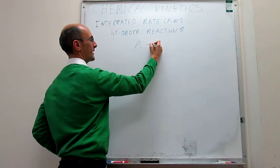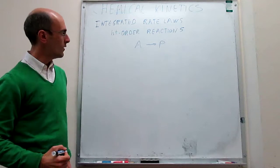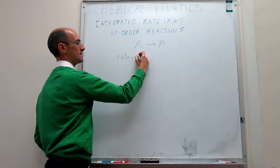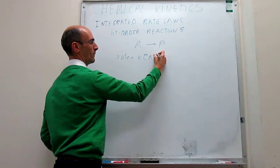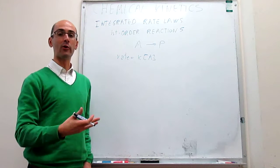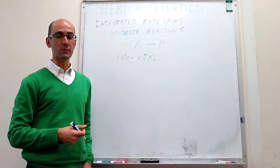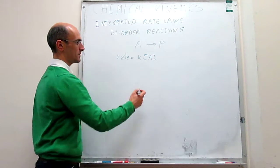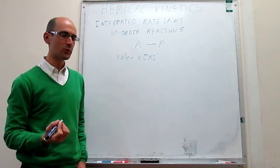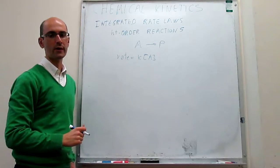Suppose that we have a reaction with one reagent: A to give P. We can write the rate law as the rate equal to k times the concentration of A to a power of x. The assumption here is that we have carried out experiments to determine the reaction order, and we have discovered that this reaction is first-order. So x is equal to 1, and that means this reaction will be first-order, or for convenience we may just omit the exponent and simply write rate equals k times [A].